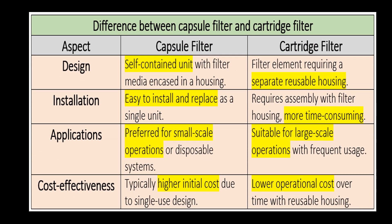To conclude, we can differentiate between capsule filters and cartridge filters with four important aspects: design, installation, applications, and cost effectiveness. First, design: capsule filters are a self-contained unit with filter media encased in a housing, whereas cartridge filters are a filter element requiring a separate reusable housing.